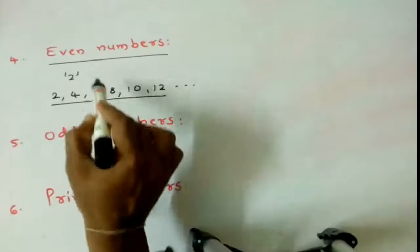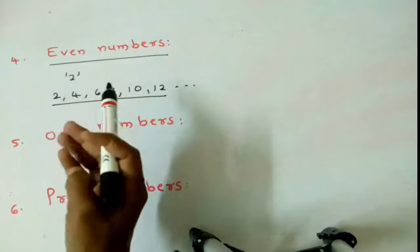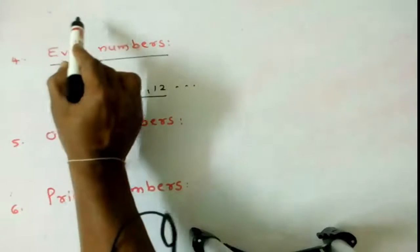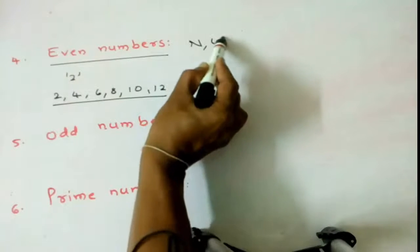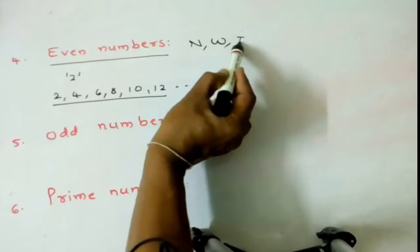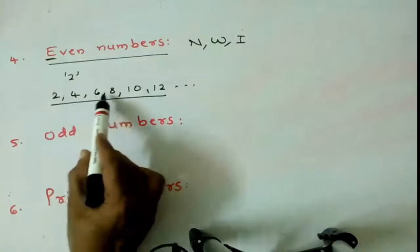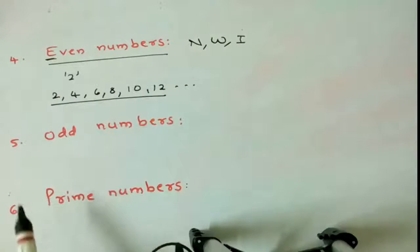So this is the fourth type of number. First one is natural numbers, whole numbers, integers. Next, even numbers. Those are all 2, 4, 6, 8. The multiples of 2 are nothing but even numbers.